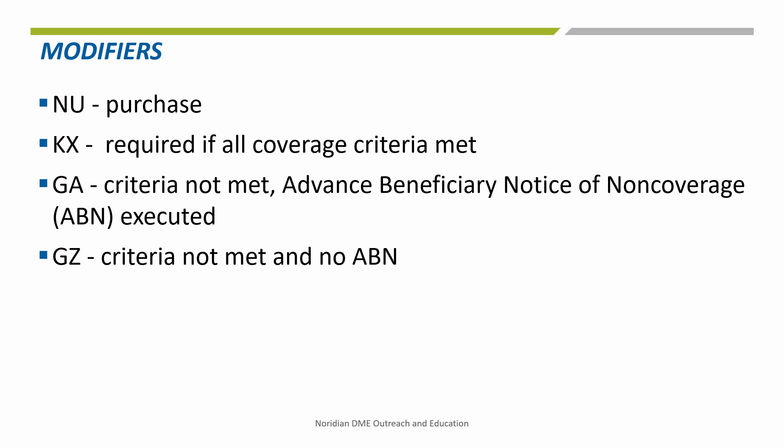The NU modifier is necessary to indicate a purchase of the device. In addition, this policy requires the use of the KX modifier when billing if all of the coverage criteria required in the policy are met. If the criteria are not met, the supplier must append either the GA or GZ modifier to the claim line. The GA modifier indicates that an Advanced Beneficiary Notice of Non-Coverage, or ABN, has been executed, showing that the supplier has informed the beneficiary the reasons that Medicare can't pay for this item and the beneficiary has agreed to receive the item and assume financial responsibility. The GZ modifier indicates that the coverage criteria has not been met and that no ABN was executed. While Medicare can't pay for this item, there may be cases when a secondary insurance would require a denial from Medicare in order to consider payment. If an E0486 is billed without a GA, GZ, or KX modifier, it will be rejected as missing information.